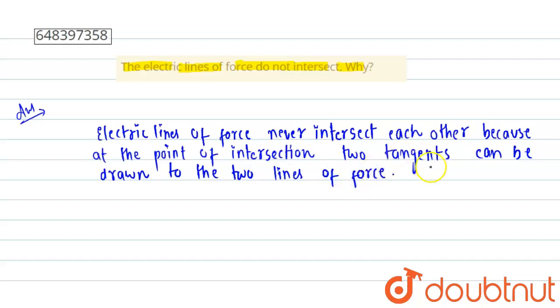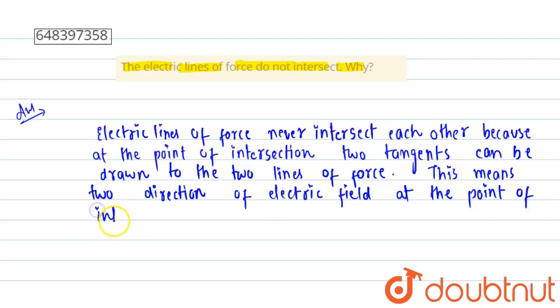This means two directions of electric field at the point of intersection, which is not possible.